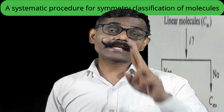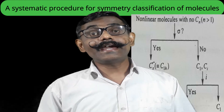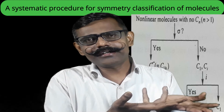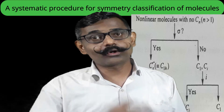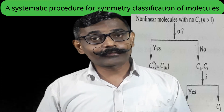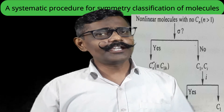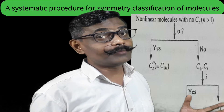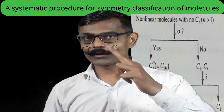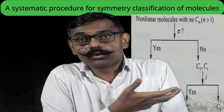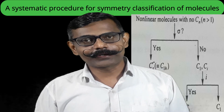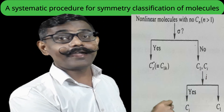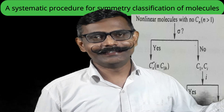Now consider the second category — molecules where Cn does not exist for n greater than one. When only C1 remains, that is identity, so we don't consider it. For such molecules, ask: is there any plane of symmetry σ? If yes, the point group is Cs. If no, the point group can be Ci or C1. To distinguish between these two, ask: is there a center of inversion i? If yes, point group is Ci; if no, point group is C1.